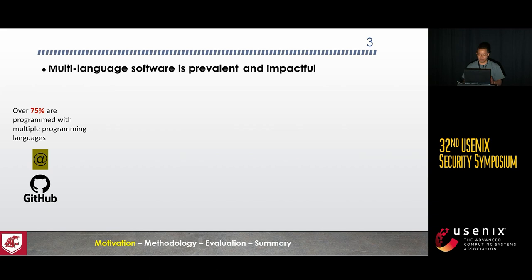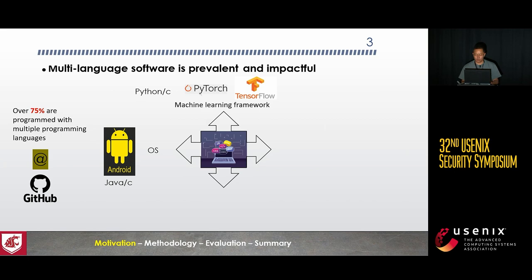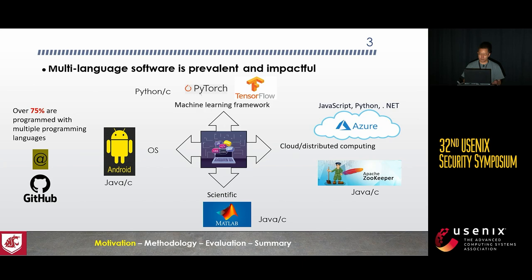For example, the Android OS, PyTorch, TensorFlow in machine learning frameworks, Kafka and Flink in cloud distributed computing, and MATLAB in scientific software.